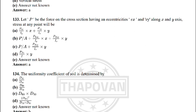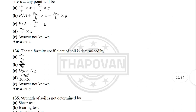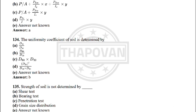Next: let P be the force across a section having eccentricities ex and ey along the x and y directions. Stress at any point will be — the correct answer is option A: P × ex / Iy × x + P × ey / Ix × y.